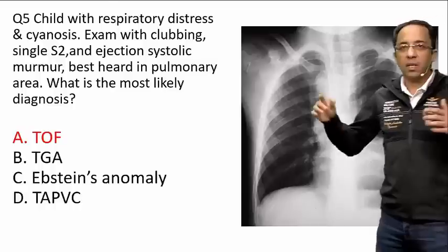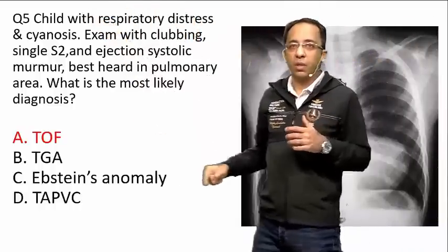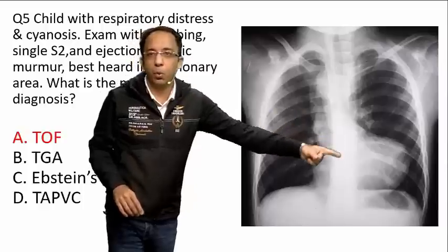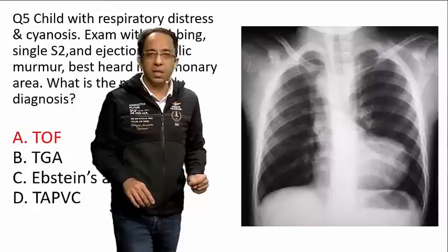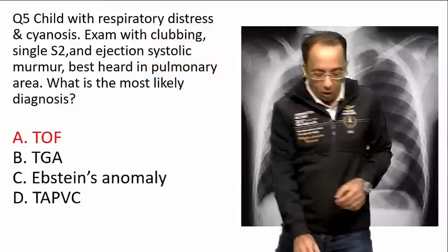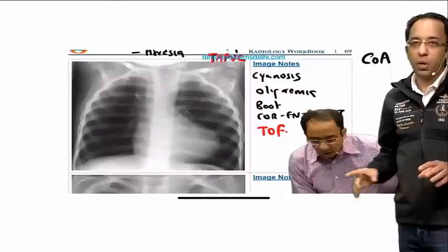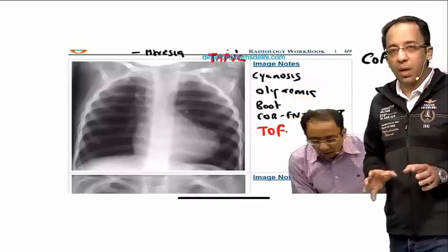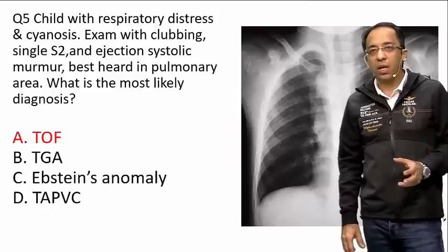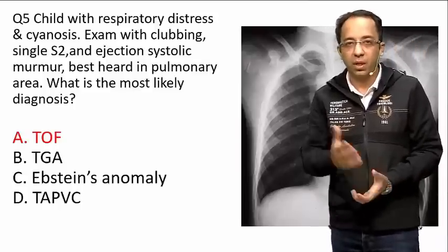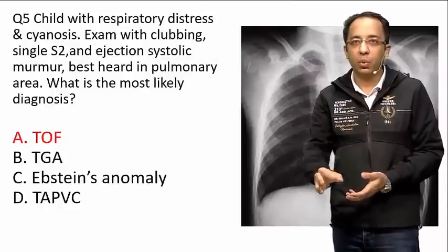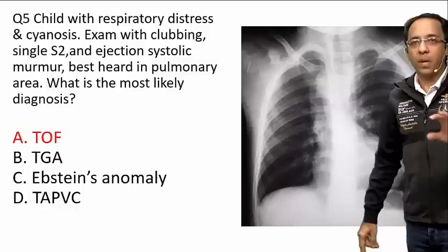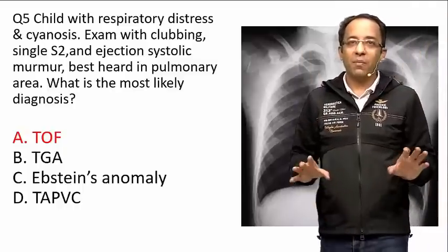Next, a child presented with the keyword cyanosis and respiratory distress. A typical x-ray was shown with oligemic lung fields, a right-sided aortic arch, and a boot-shaped heart — the classic coeur en sabot appearance. This is seen in Tetralogy of Fallot. The keywords to remember are: cyanosis, oligemia, and boot-shaped or coeur en sabot heart. In next year's exam, remember the topic may repeat but they could show TAPVC with the snowman heart appearance instead.